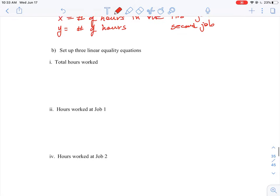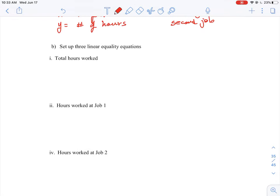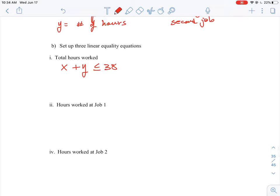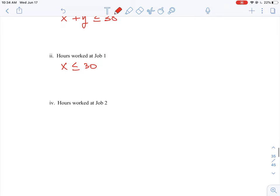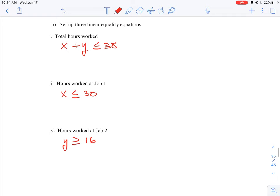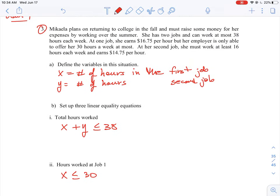Then we have some constraints. The total hours worked can't be more than 38 hours, so x plus y is less than or equal to 38. That's one of our inequalities. For job one, the value cannot exceed 30 hours, so x has to be less than or equal to 30. And then job two we need a minimum of 16 hours, so y is greater than or equal to 16. So those are our three equations that we would get out of this problem.